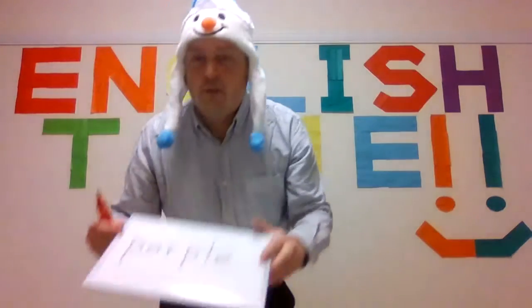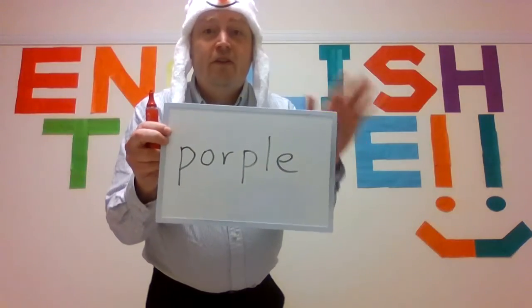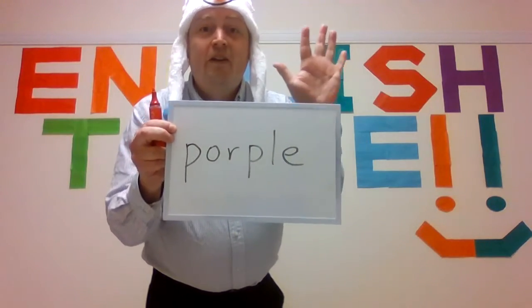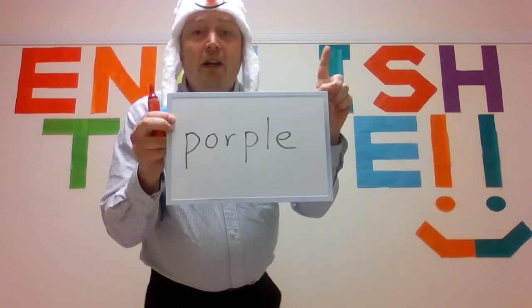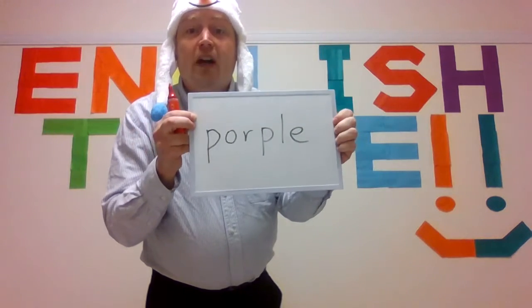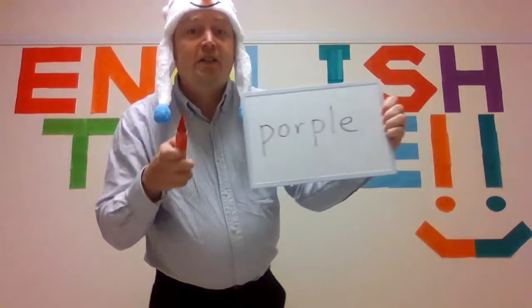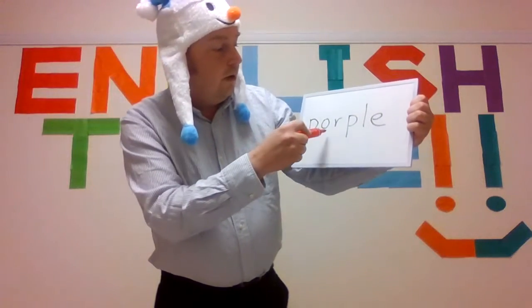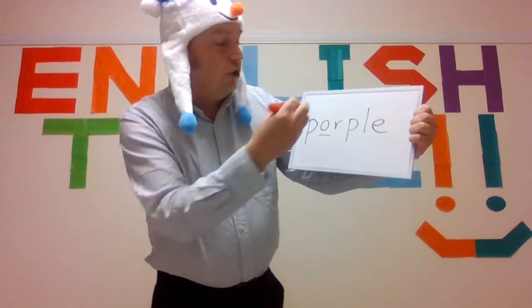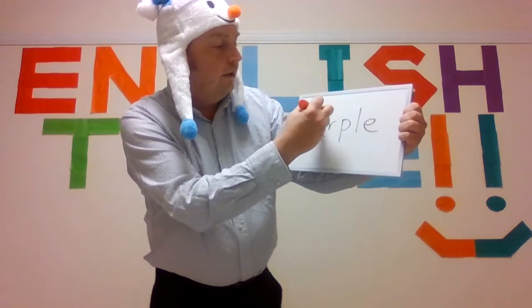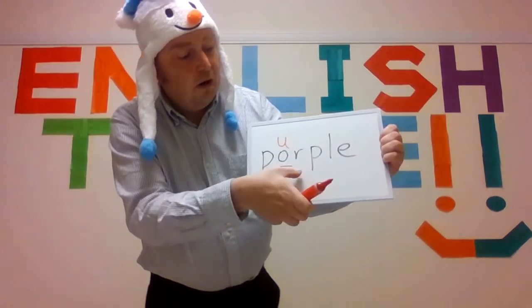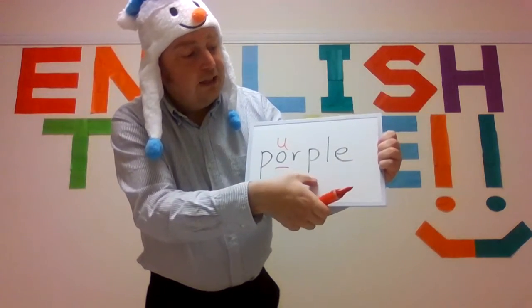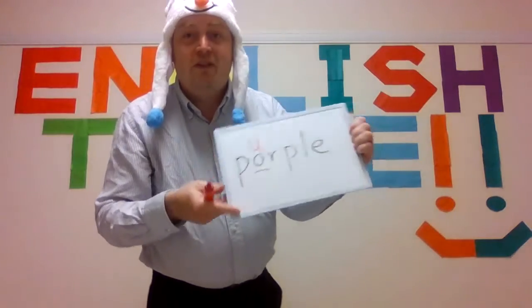Next one — purple. Five seconds: five, four, three, two, one. Did you find the wrong letter? The wrong letter is O. You should have a U. Let's spell together: P, U, R, P, L, E — purple. Very good.